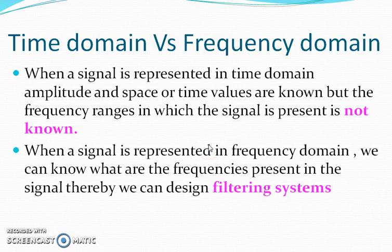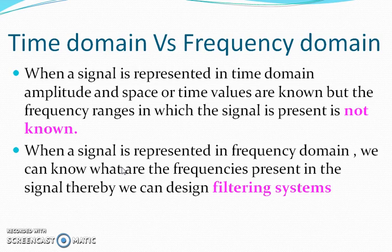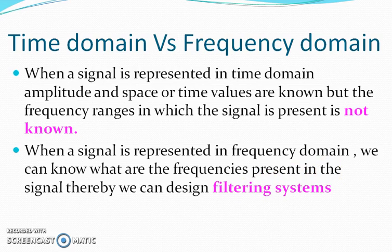We can analyze a signal in the time domain, or we can go for a transformation. If we represent a signal in the time domain, we can know the amplitude and time values, but we cannot know the frequency ranges present in the signal. Therefore we need to take a transformation — either Fourier transform, Z-transform, Laplace transform, discrete cosine transform, or other transforms — in order to understand the frequencies present in the signal, which allows us to design filtering systems. These are the basics of signal and system. In the next session, we will discuss the tools required for analyzing different systems.